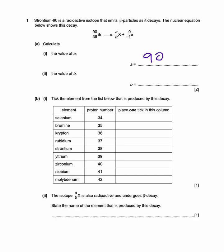And we have to do the same for the bottom for the proton number. So for this, we've got 38 becomes whatever b is, plus minus one. So whatever b is, you've got to add minus one to it to get 38. So b would have to be 39. Because 39 plus minus one equals 38. So b is 39.